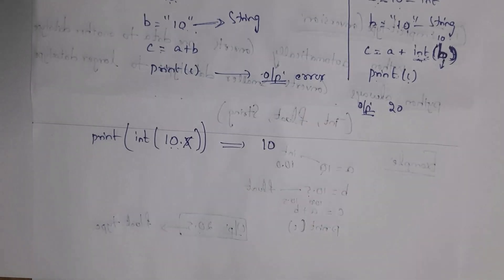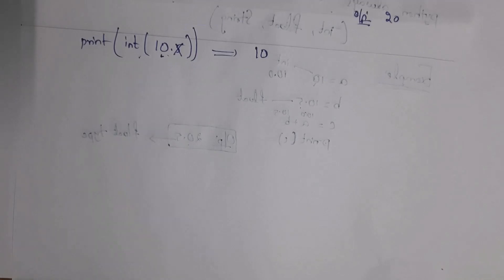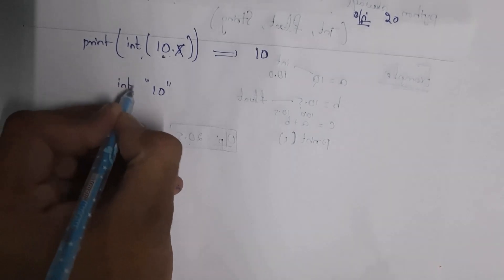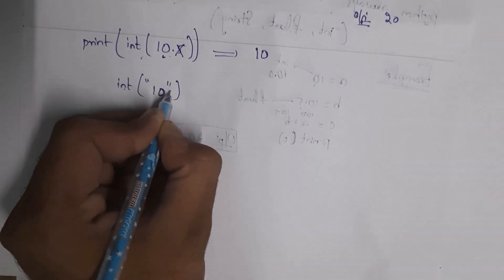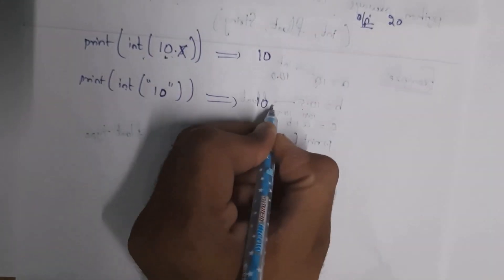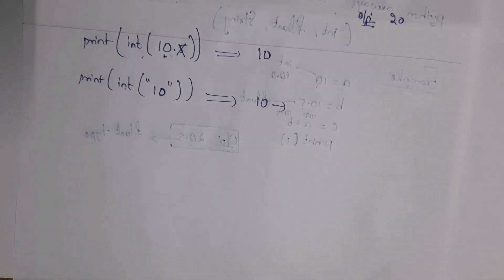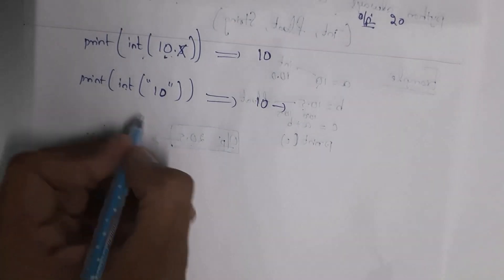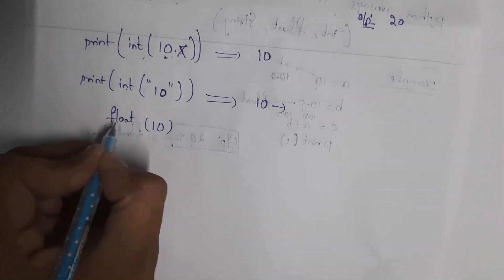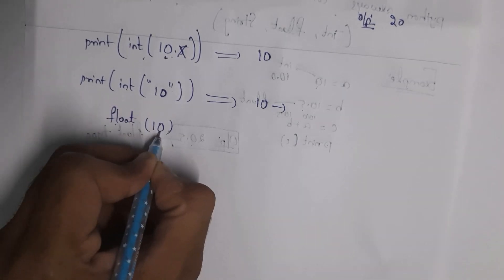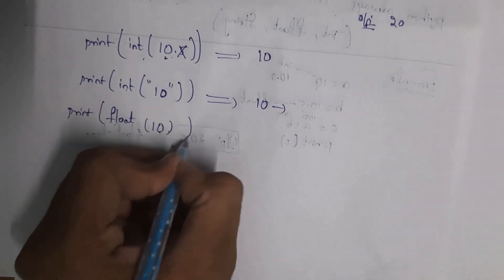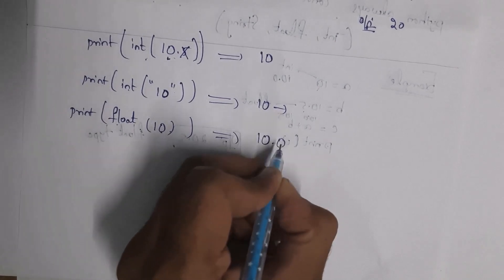You can also convert a string to an integer using int(): for example, int('10') gives output 10 as an integer. Similarly, you can convert an integer to a float using the float() function. For example, float(10) converts integer 10 to float 10.0. So print(float(10)) gives output 10.0, which is a float value.